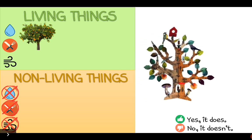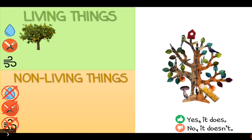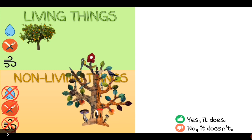What about this? This is a paper tree. Do you think that this paper tree needs water? No, it doesn't. Does it need food? No, it doesn't. And does it need air? No, it doesn't. So is it a living thing or a non-living thing? Good job — it's a non-living thing! Fantastic! We have two points, good job!